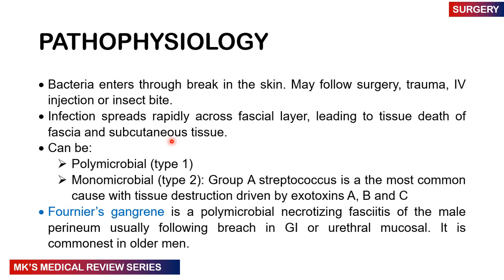Necrotizing fasciitis can be either type 1, which is polymicrobial — involving more than one causative agent — or type 2, which is monomicrobial. Type 2 is often attributed to group A streptococcus, which is the most common cause of tissue destruction due to the production of exotoxins A, B, and C.